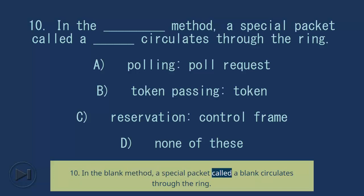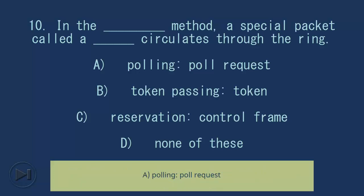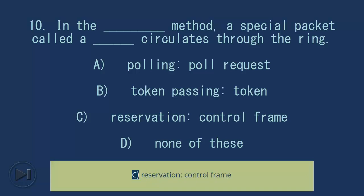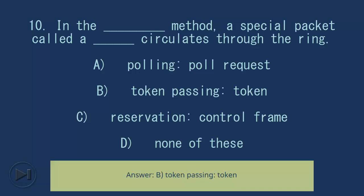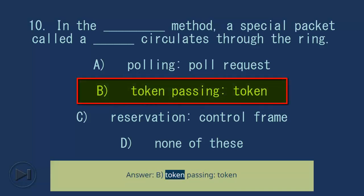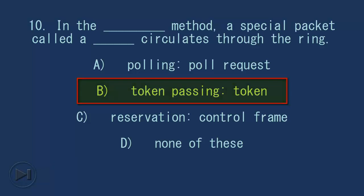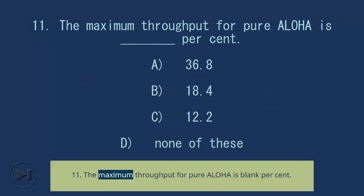Question 10: In the blank method, a special packet called a blank circulates through the ring. A) Polling – poll request, B) Token Passing – token, C) Reservation – control frame, D) None of these. Answer: B) Token Passing – token.